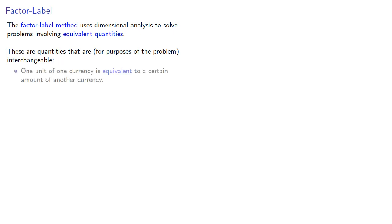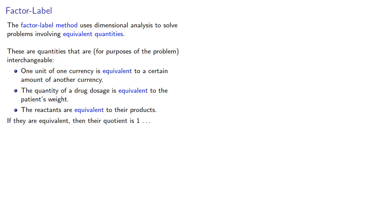For example, one unit of one currency is equivalent to a certain amount of another currency. The quantity of a drug dosage is equivalent to the patient's weight. The reactants are equivalent to their products. If they are equivalent, then their quotient is one, and we can always multiply by one.